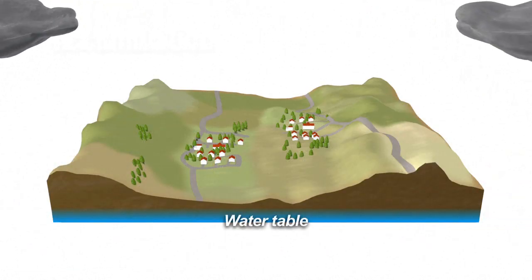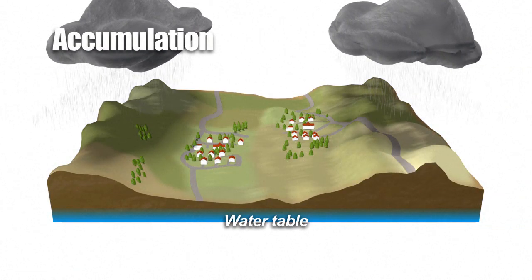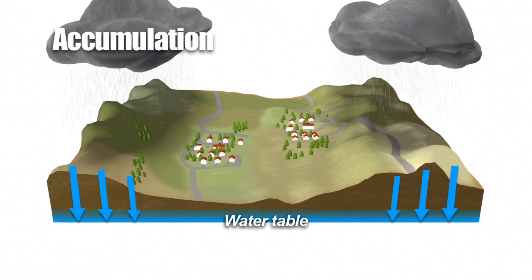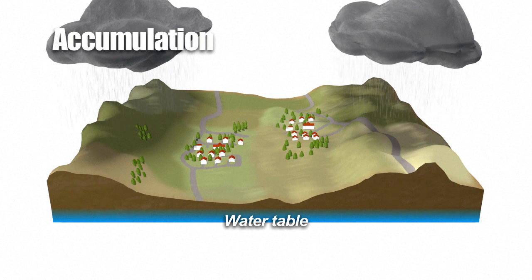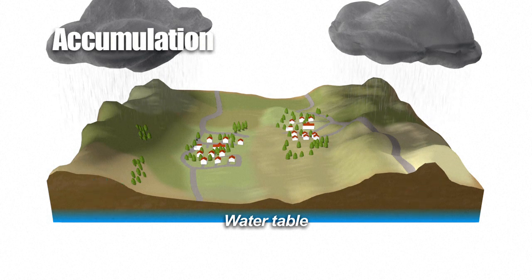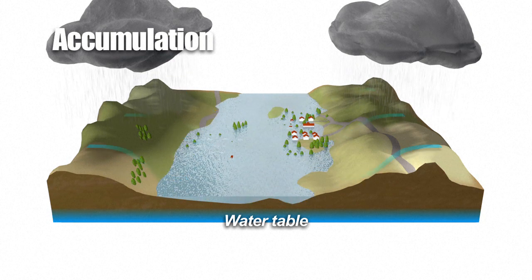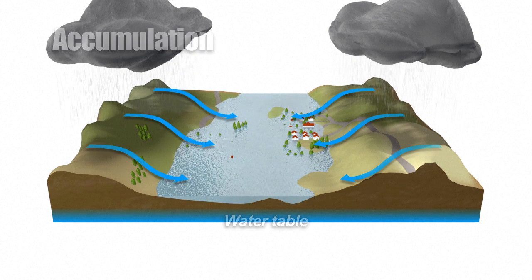The second type of flooding involves the accumulation of water in lowlands or basins. In normal weather conditions, water is absorbed into the ground and merges with the water table. When the ground is saturated, water builds up in low-lying areas. Runoff then quickly fills the valley and its waterways.